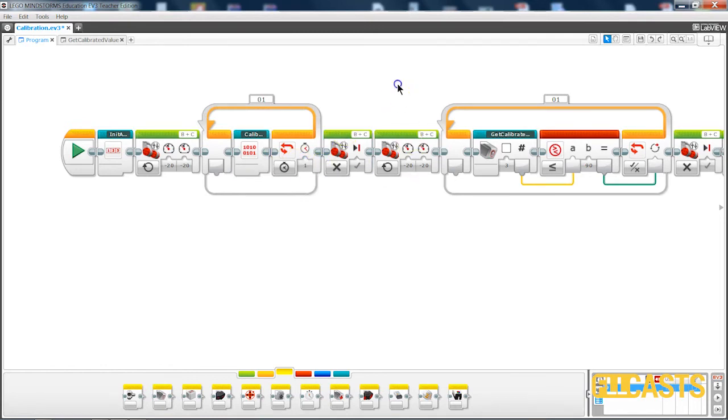Then we move forward and detect the value of the third sensor. And if this value is less than 90%, this means that we are just starting with black, we stop.